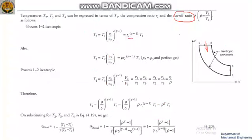T2 equals T1 times (V1/V2)^(γ−1), which is RC^(γ−1) times T1. From process 2 to 3, since it is a constant pressure process, applying the ideal gas relation V1/T1 = V2/T2, you get T3 equals T2 times (V3/V2).